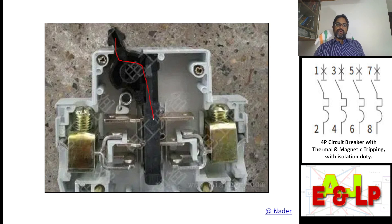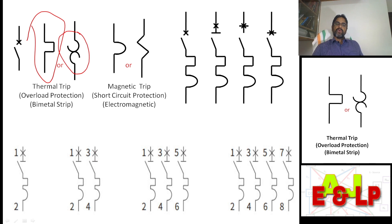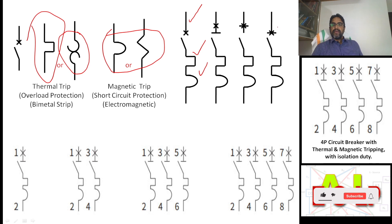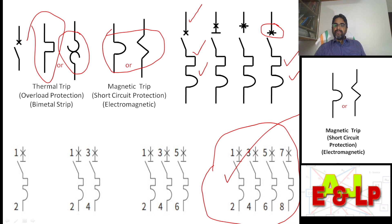Here is the cross-section of an isolator — there is no electromagnetic tripping or thermal tripping. Without any such protection it is simply an isolator. This symbol represents thermal trip and this one shows magnetic trip. So this one is a circuit breaker without isolation duty having both trippings. The last one is a circuit breaker with isolation duty and having both trippings. And a four-pole circuit breaker having isolation duty and both trippings — that is the meaning.